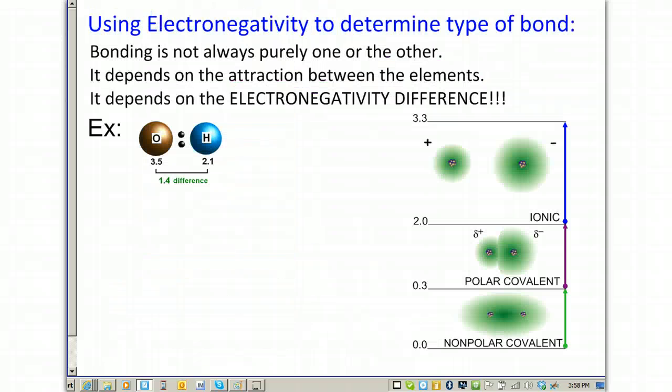We're going to learn now how to use electronegativity, remember that's represented EN, to determine what type of bond we're dealing with. Realize that bonding is not always purely one or the other. In other words, it's not just ionic, and it's not just covalent.